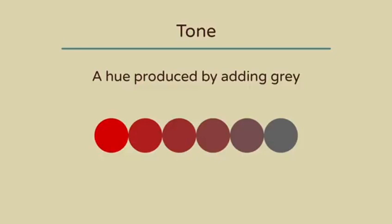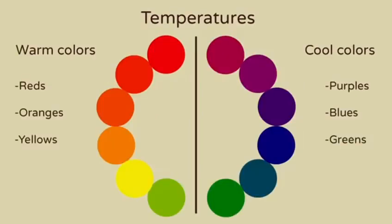A tone is a hue produced by adding gray, so now you have a variety of red tones made by mixing red with increasing amounts of gray.